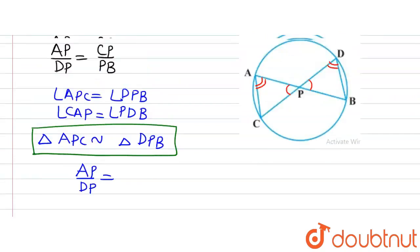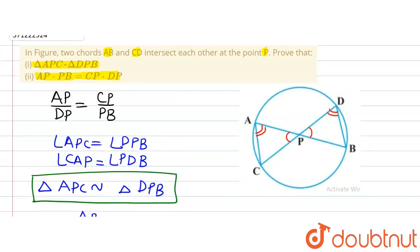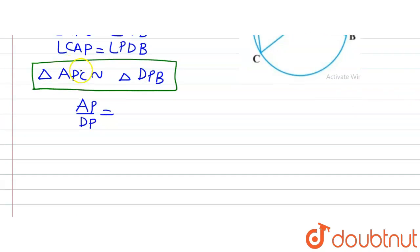So we can say that AP divided by DP will be equal to this side, that is CP divided by this side, that is PB.